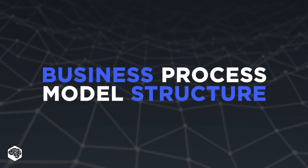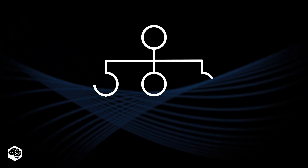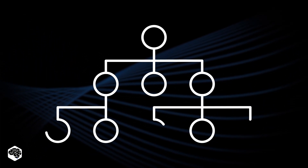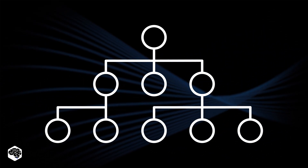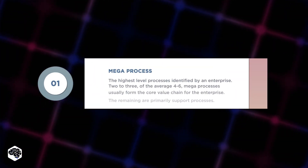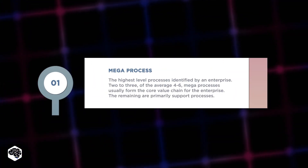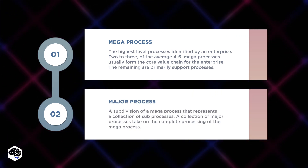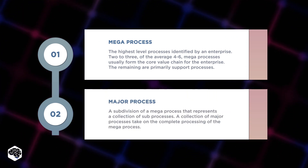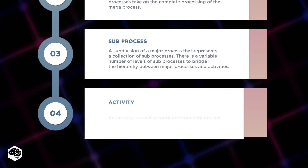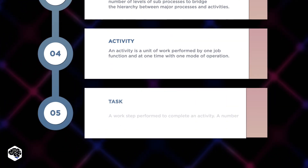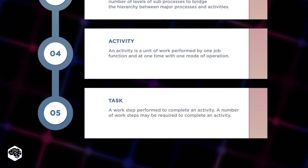Let's take a look at business process model structure. We can think of the process model as levels with a hierarchical structure that classifies all the organization's processes to make it easier to optimize the results. It includes: first, mega process that forms the core value; next, major process that represents a collection of sub-processes; then comes the sub-process itself; next, activity; and finally, task, which is performed to complete an activity.